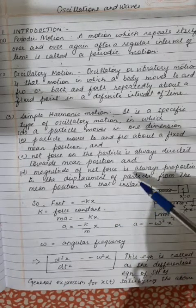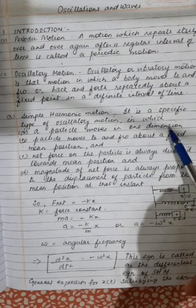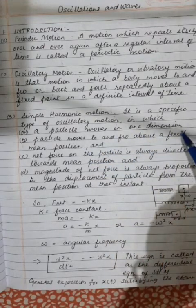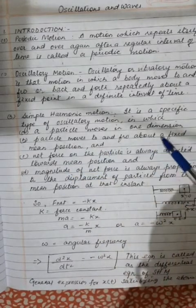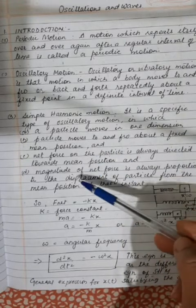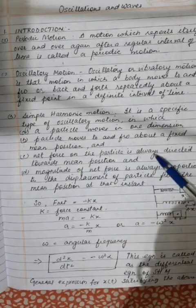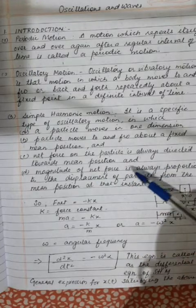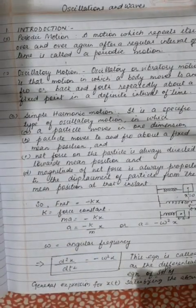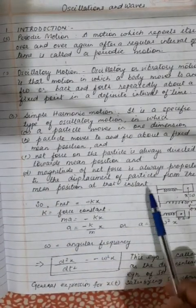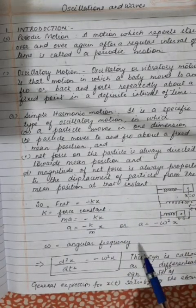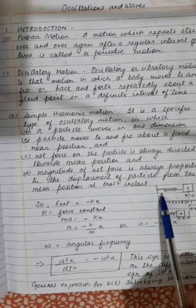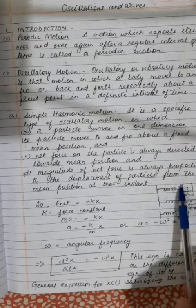Next we learn about simple harmonic motion. Simple harmonic motion is a specific type of oscillatory motion in which a particle moves in one dimension, to and fro about a fixed mean position. The net force on the particle is always directed towards the mean position, and the magnitude of the net force is always proportional to the displacement of the particle from the mean position.